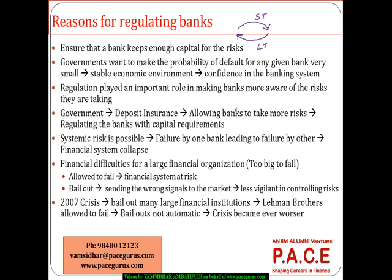This money keeps rotating because whatever the short-term deposit that has come in, the bank has lent to someone. The person who has borrowed it is going to purchase something. Whoever has sold that got the cash and is again depositing that same money with the bank, and the bank, having received it again, is giving some amount of loan. So overall, the total loans relative to the deposits or capital the bank has is much, much more.